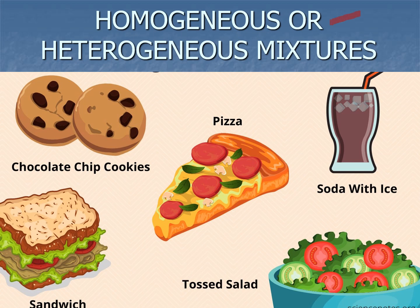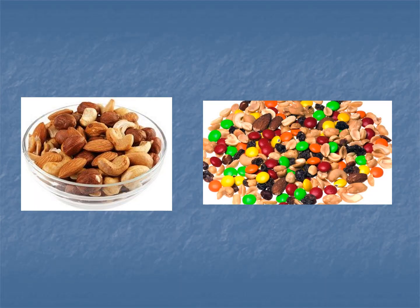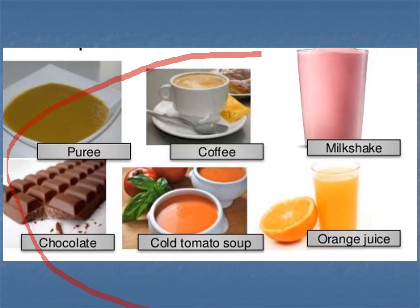Examples: homogeneous mixtures and heterogeneous mixtures. All of these shown are heterogeneous because you can see the individual parts and ingredients of each food. These ones here are also heterogeneous. For homogeneous examples, you see only one uniform appearance — like coffee, a green liquid drink, milkshake, orange juice, tomato soup, and chocolate. These are homogeneous. But if you see pearls in a milkshake or visible separate components, it becomes heterogeneous. If it looks uniform like this, it is called a homogeneous mixture.